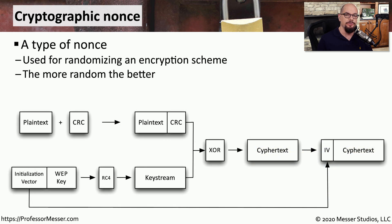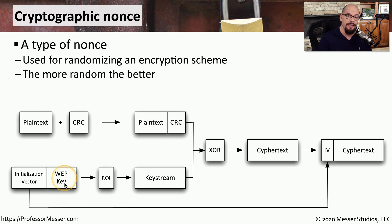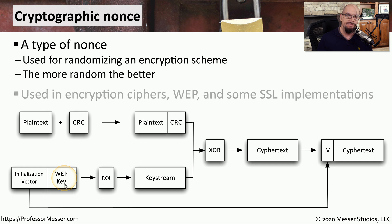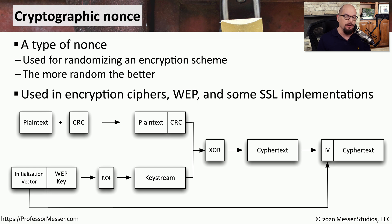A type of nonce commonly used in encryption is an initialization vector, or IV. This is a way to add randomization to the encryption scheme being used. If we add this initialization vector to an encryption key — especially a key being used over and over again — it makes the overall encryption method that much stronger. You may see an IV used in encryption methods such as WEP encryption, shown here in this block diagram, and in some implementations of SSL.